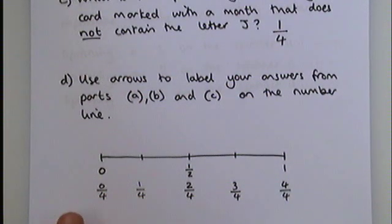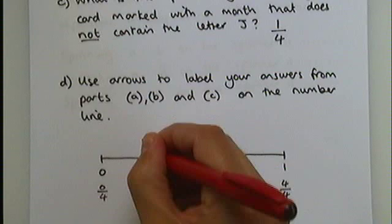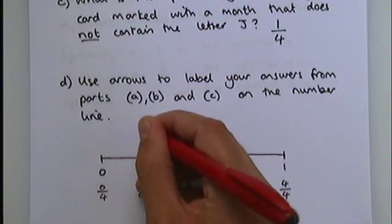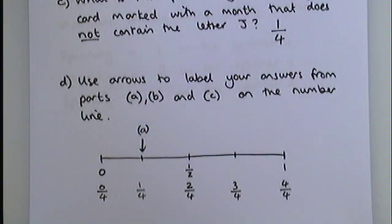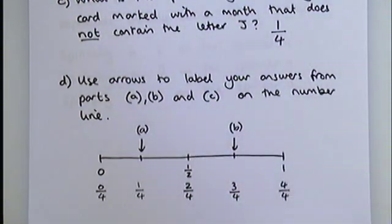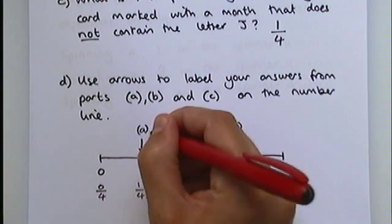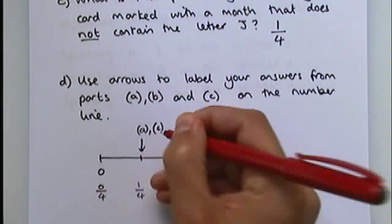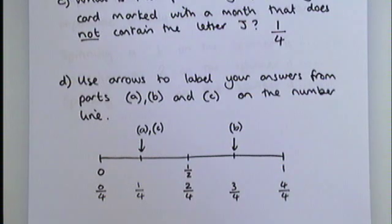Here we had for part A, one quarter, so we put an A there. For part B, we had three quarters, so we put a B there. And for part C, we had one quarter again, so I'm just going to put a little comma and a C to say that we're pointing to one quarter again.